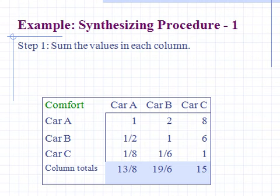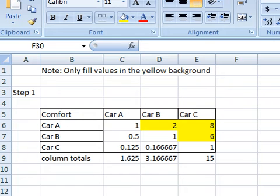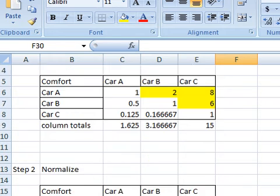The first step is to sum values in each column. 1 plus 1/2 plus 1/8 is going to give me 13 divided by 8. And here for C, 8 plus 6 plus 1 is 15. For B, do the same, just like it has been done in Excel. So here are the values after summing.